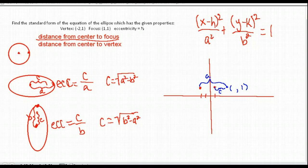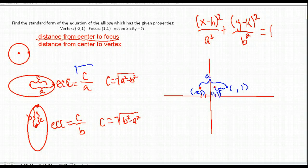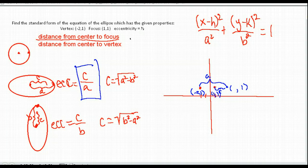Our vertex is at (-2, 1) and our focus point is at (1, 1). The eccentricity is 1/2, and since it's a horizontal ellipse, eccentricity equals C over A.